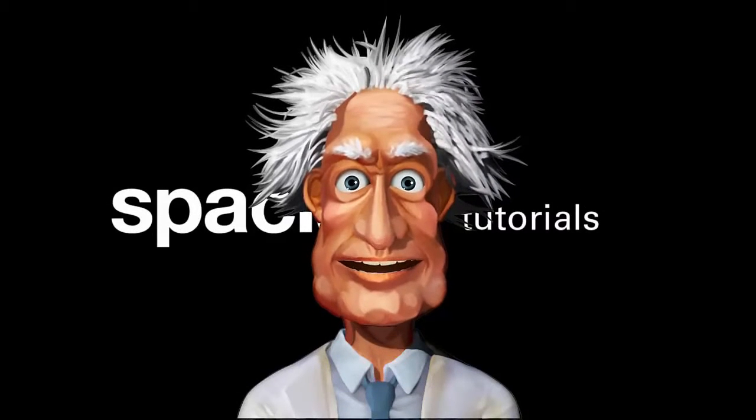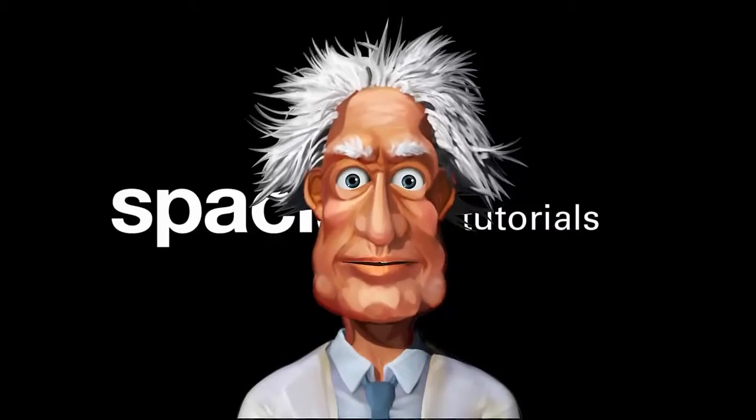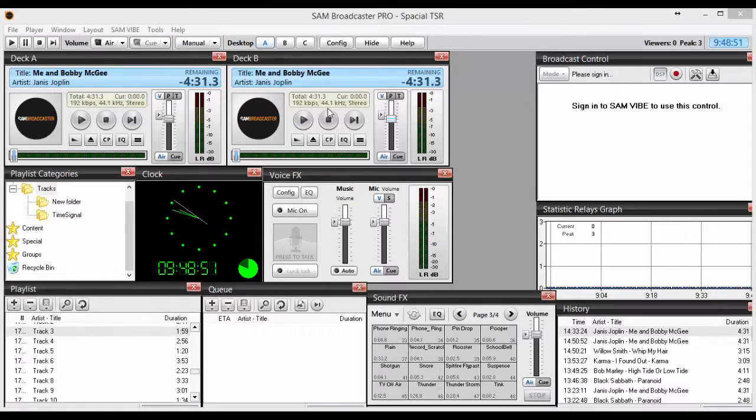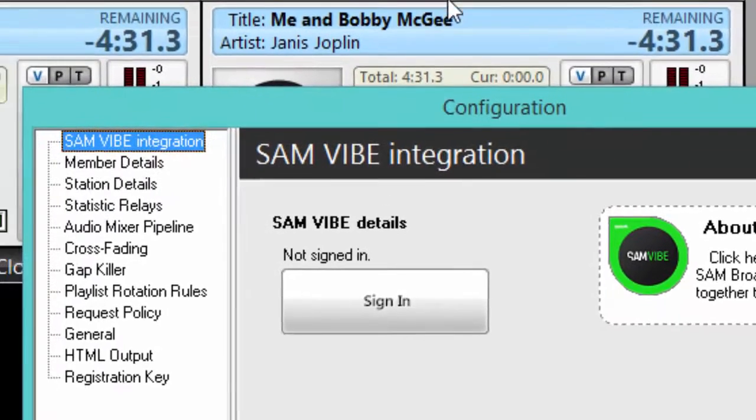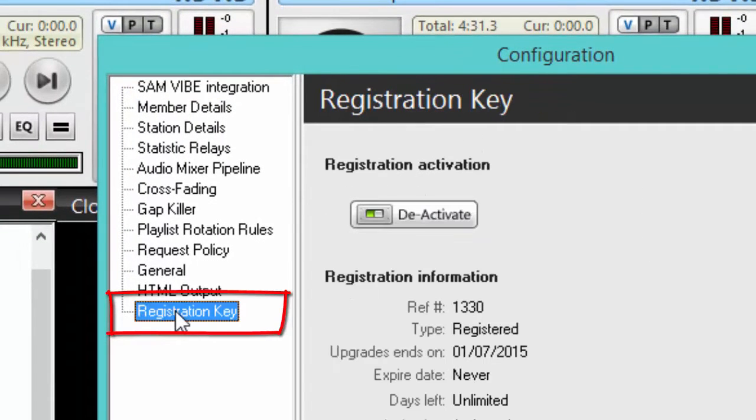You can of course manually deactivate any or all of your activations by opening SAM Broadcaster or SAM DJ and clicking on Config, Registration Key, and then the Deactivate button.